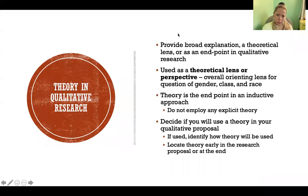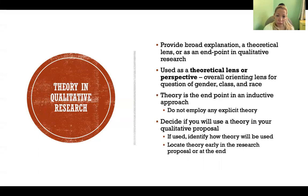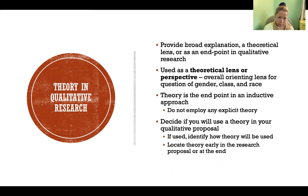In qualitative research, there are a few different ways that we use theory. It might be used in the design and development of the research study, because it might provide a broad explanation for a topic or phenomenon we want to study. It might provide a theoretical lens through which to view the phenomenon. But very often the theory is what is produced by the qualitative research, rather than being used in the design — it is often produced by the research itself.